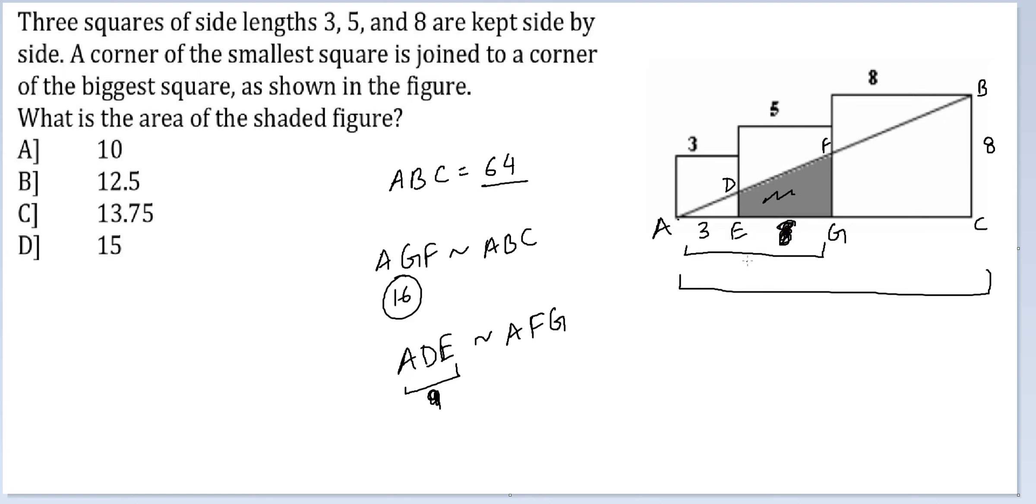This is 3, AG is 8. So the ratio of length of side of ADE to AFG is 3 is to 8. This is for sides. So the ratio for area will be 9 is to 64.